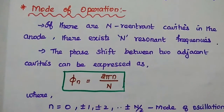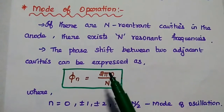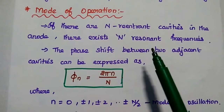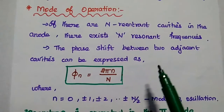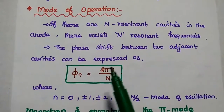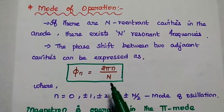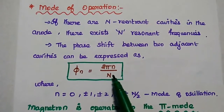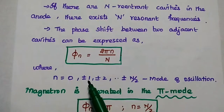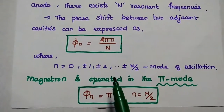Next, we are going to discuss the mode of operation of the magnetron. If there are N reentrant cavities in the anode, then there exist N resonant frequencies. Based on the number of cavities, we can define the mode of operation. The phase shift between two adjacent cavities can be expressed as φ_n, which equals 2πn divided by capital N, where capital N represents the number of cavities. Here small n equals 0, ±1, ±2, up to ±N/2, defining the mode of oscillation.